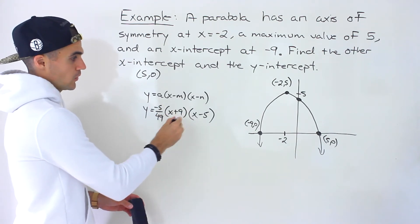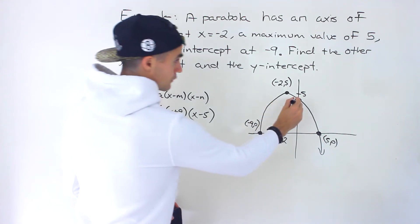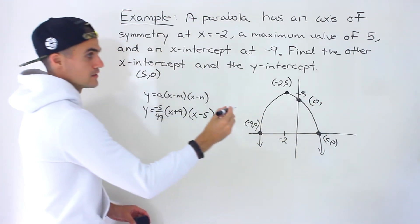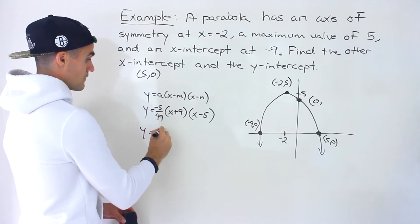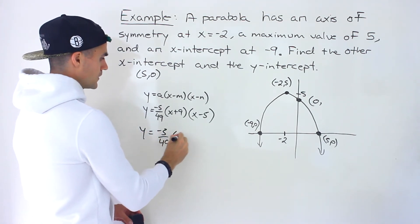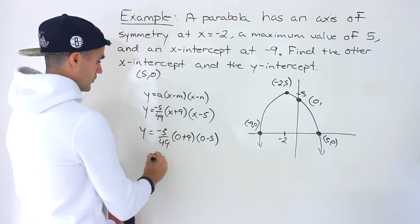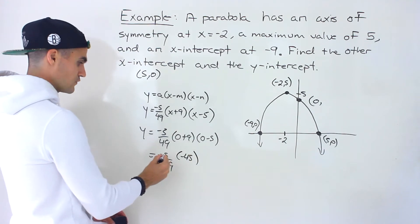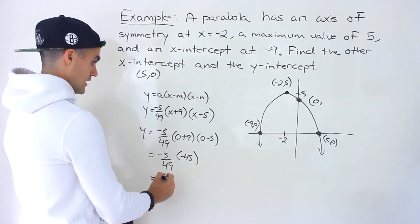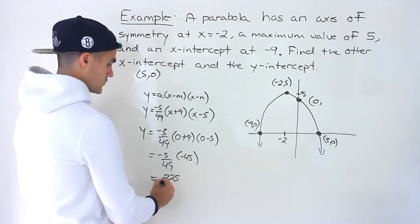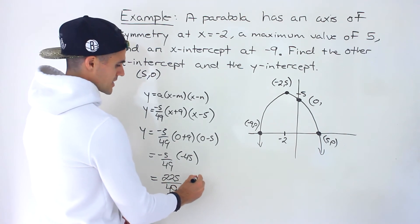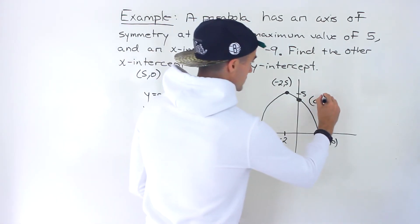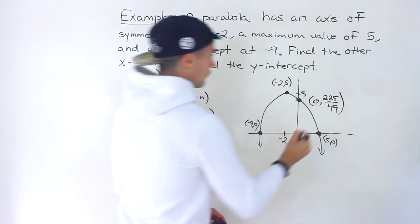Now we have the actual equation for this parabola and we can find the y-intercept. For the y-intercept, the x-value is 0. So we plug in 0 for x: (0 plus 9)(0 minus 5) gives 9 times negative 5, which is negative 45. Then negative 45 times negative 5 gives 225. So we'd have 225 over 49. That's approximately 4.6 as a decimal, but I'll keep it as a fraction. So the y-intercept is 225 over 49.